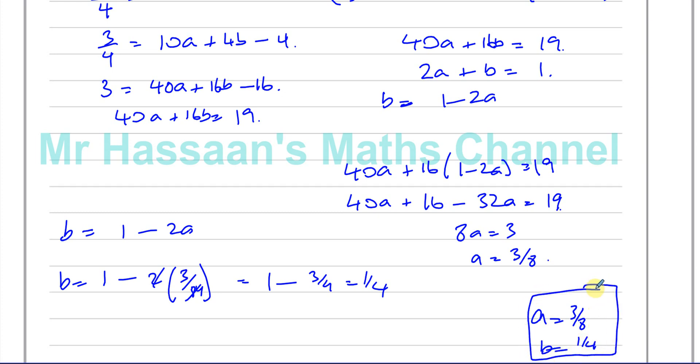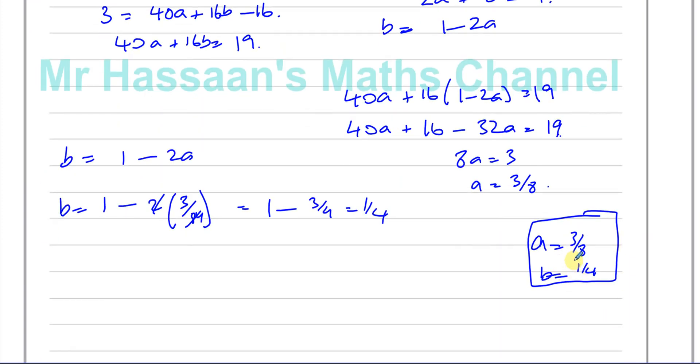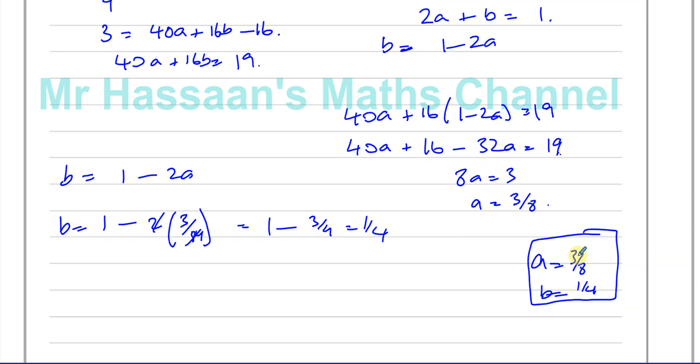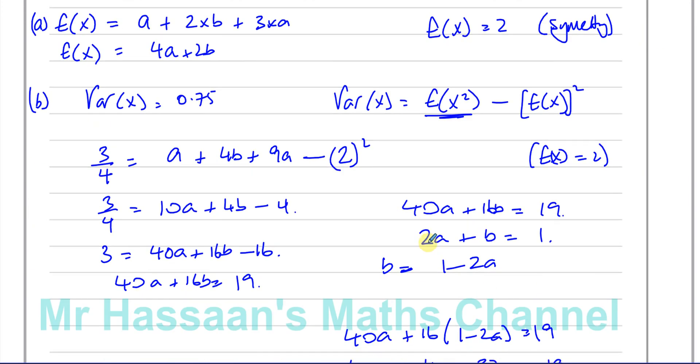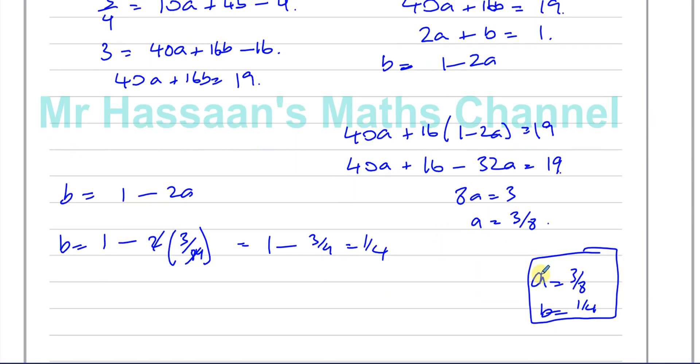And we can check to see if they add up to, if I have 2a plus b, so 2a, that's going to be 6 over 8 plus 1 quarter. That's 6 over 8 plus 2 over 8. That's 8 over 8. That's right. So we can see that they add up to 1. So that kind of justifies the answer. So there we have the two values, a and b.